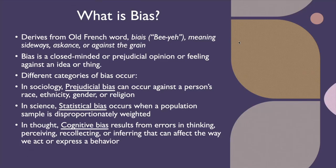So what is bias? The term derives from an old French word meaning sideways, askance, or against the grain. Bias is a closed-minded or prejudicial opinion or feeling about an idea or thing. There are different categories: in sociology, prejudicial bias against race, ethnicity, gender, or religion; in science, statistical bias when a population sample is disproportionately weighted; and in thought, cognitive bias results from errors in thinking, perceiving, recollecting, or inferring that affect the way we act or express a behavior.